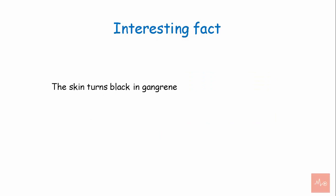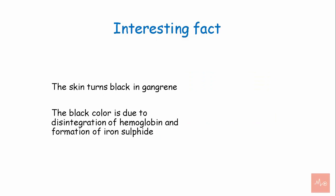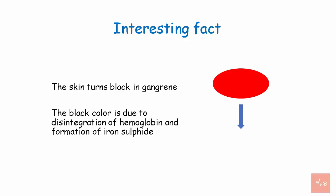The skin turns black in gangrene. This is due to disintegration of hemoglobin and formation of iron sulfide, which gives a black color to the skin.